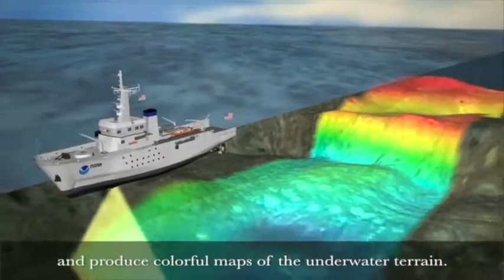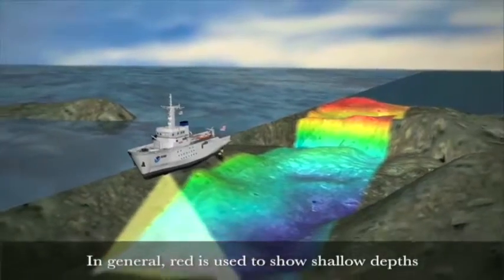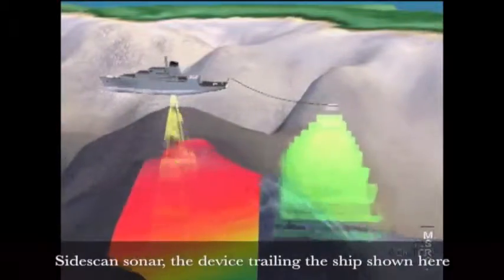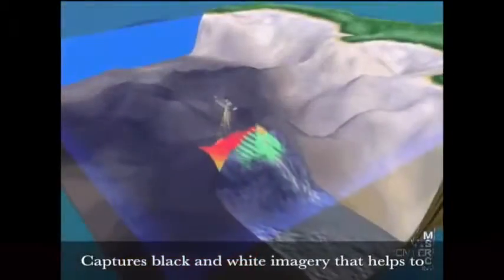In general, red is used to show shallow depths and blue or purple for deeper depths. Side scan sonar, the device trailing the ship shown here, captures black and white imagery that helps to identify submerged wrecks and obstructions.